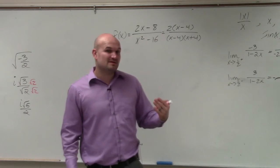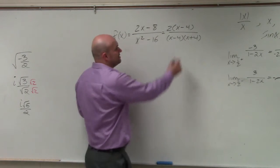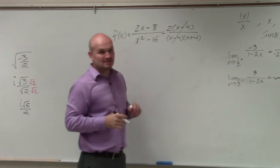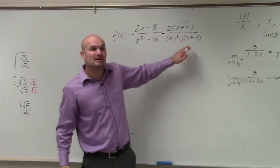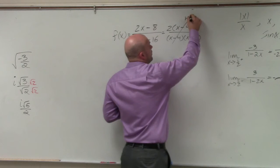That's really important because now you can see that the x minus 4's divide out. Since those divide out, they're not an asymptote. There's still a discontinuity, but it's not an asymptote. It's now called a hole.